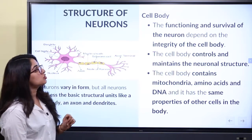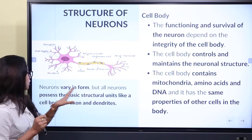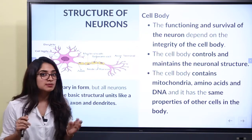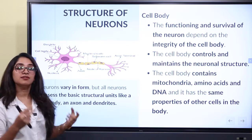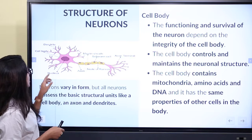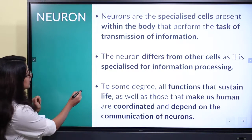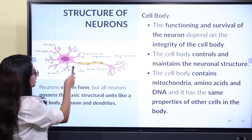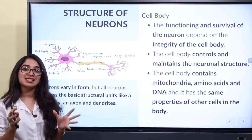Now we are looking at the structure of neurons. Neurons are different in form, but all neurons possess the same basic structural units. There is a cell body, axon, and dendrites — these are common in every neuron even though they may vary in form. Looking at this figure: this is the cell body, these branching thread-like positions are the dendrites, this is the myelin sheath, axon terminal, axon, and nucleus. This is the basic structure of a neuron.